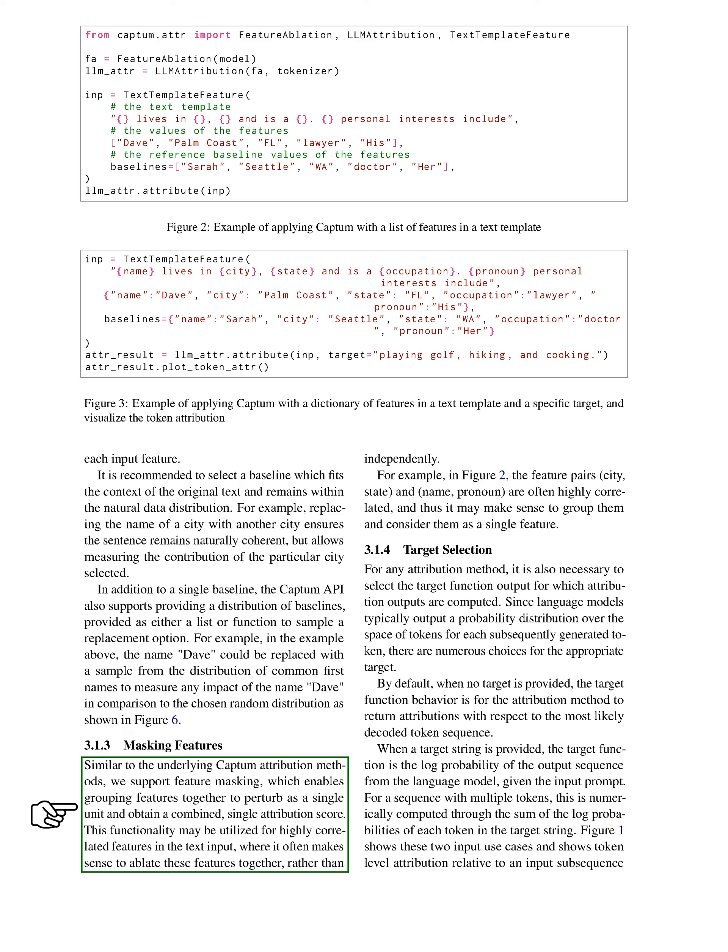Similar to the underlying Captum attribution methods, we support feature masking, which enables grouping features together to perturb as a single unit and obtain a combined single attribution score. This functionality may be utilized for highly correlated features in the text input, where it often makes sense to ablate these features together rather than independently. For example, the feature pairs city-state and name-pronoun are often highly correlated, and thus it may make sense to group them and consider them as a single feature.